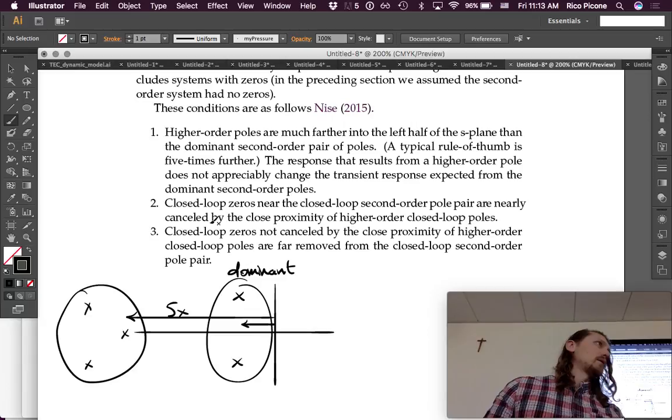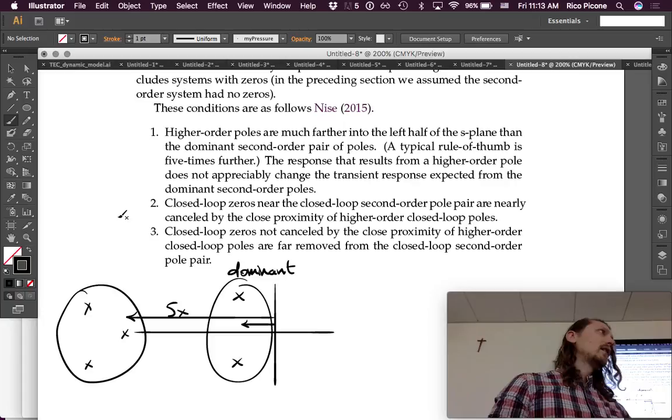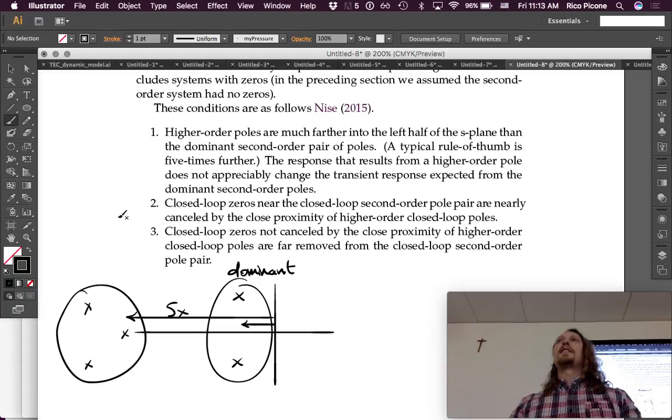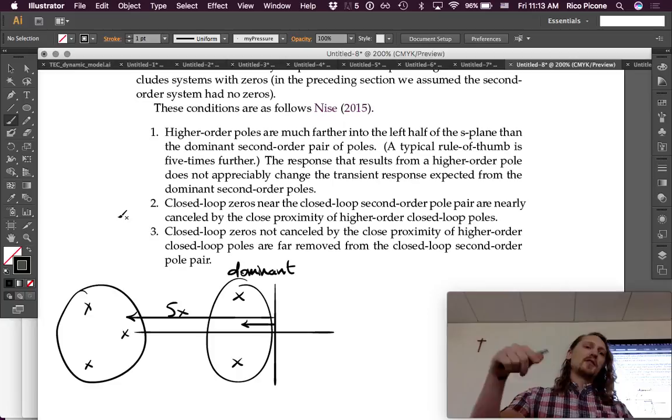oh, there's a certain rise time or whatever that we specified, or a settling time that we specified. Well, that settling time or that rise time for the actual system is only going to be valid if this approximation is pretty valid, if the assumption is pretty valid. So, if we do a simulation and we actually calculate what the rise time is or the settling time is, then we can find out if it was valid. At the end of the day,